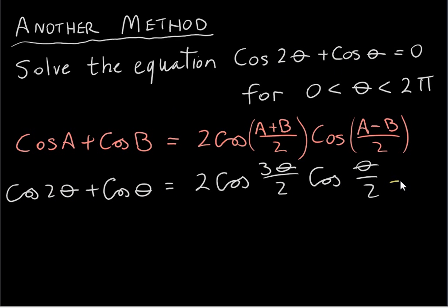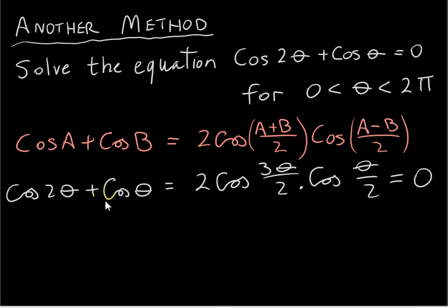The fact that we have 0 on the right-hand side makes life easy. If we had some other number instead of 0, then this method would be undoable. The fact that we have a product equal to 0 means that we can set each factor equal to 0, reducing this trigonometric equation to two simpler trigonometric equations: cos(3θ/2) = 0 and cos(θ/2) = 0.